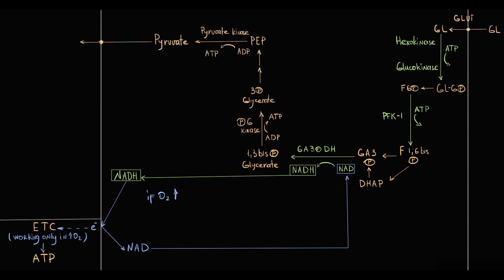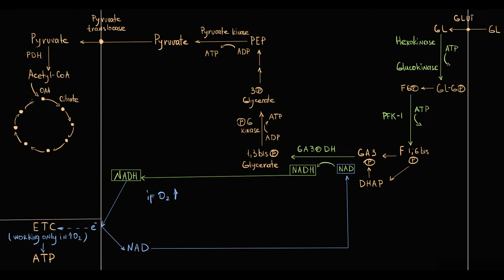With sufficient oxygen, pyruvate is converted into acetyl-CoA, which enters the Krebs cycle. In the Krebs cycle, NAD and FAD molecules extract electrons from acetyl-CoA, with formation of NADH and FADH molecules. These electron carriers then deliver electrons to the electron transport chain, resulting in energy production.